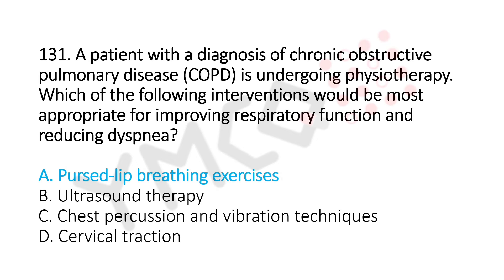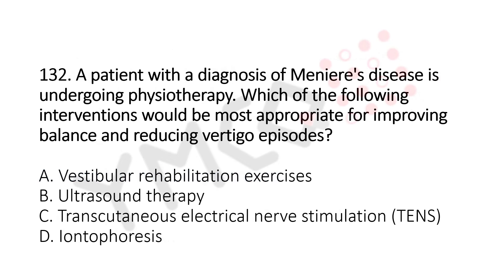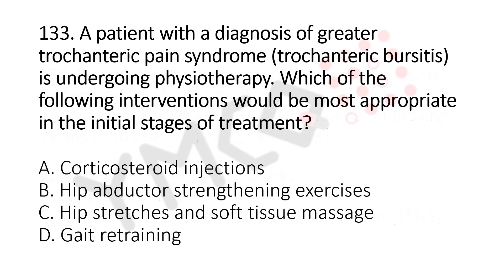Now let's move to question number 132. A patient with a diagnosis of Meniere's disease is undergoing physiotherapy. Which of the following interventions would be the most appropriate for improving balance and reducing vertigo episodes? Option A: vestibular rehabilitation exercises. Option B: ultrasound therapy. Option C: TENS. Option D: iontophoresis. The answer is option A: vestibular rehabilitation exercises.